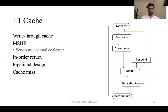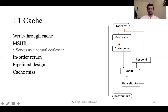Another important thing to note is that the L1 cache supports hits under misses, and as a result has miss status holding registers (MSHRs) to support this. The MSHRs also serve as a natural coalescer for servicing multiple requests going to the same cache line. As per the GCN3 specifications, the L1 cache must ensure the return order of requests — for example, a request arriving at time t must be returned before a request arriving at time t+1. It also supports a pipeline design, with multiple stages that can handle multiple requests simultaneously.